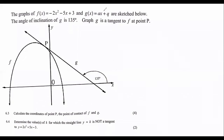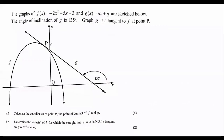We are given a parabola and a straight line. The angle of inclination is 135 degrees. Question 6.3 says calculate the coordinates of P, which is the point of contact between F and G.